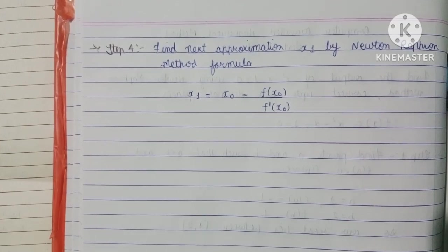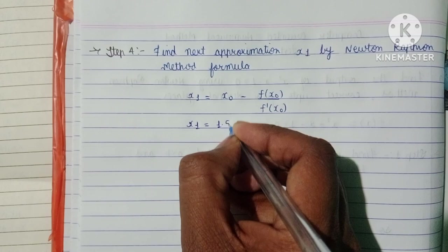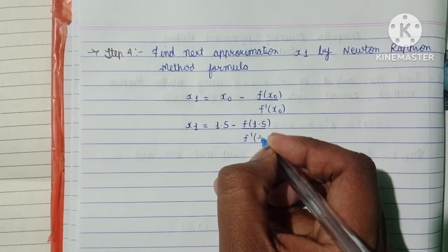Step 4: Find new approximation x₁ using Newton-Raphson formula: x₁ = x₀ - f(x₀)/f'(x₀). Here we put x₀ = 1.5: x₁ = 1.5 - f(1.5)/f'(1.5) = 1.5 - (-0.25)/2.